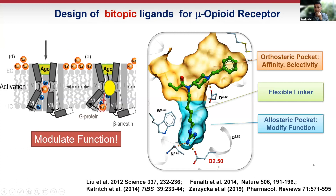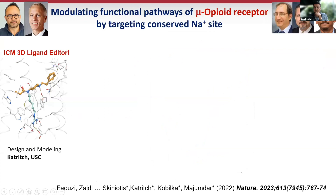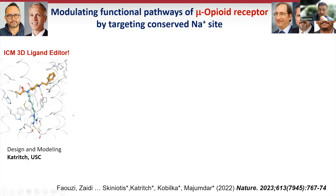This is an example of design for the mu-opioid receptor, where we started with fentanyl and extended it to the sodium pocket with a flexible linker. This is a relatively low-tech approach where we used the ICM ligand editor — I would say it's a very underrated but very powerful tool — to generate different ideas in terms of molecular design.